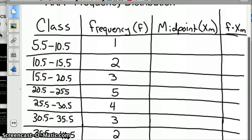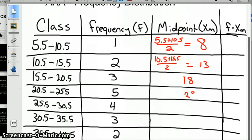To find the mean of this grouped data without having the individual data points, first find the midpoint of each class limit. Take 5.5 + 10.5 divided by 2, and you get 8. Then 10.5 + 15.5 divided by 2, that's 13. You keep on going down the list: 18, 23, 28, 33, 38. Those are our midpoints of each class.